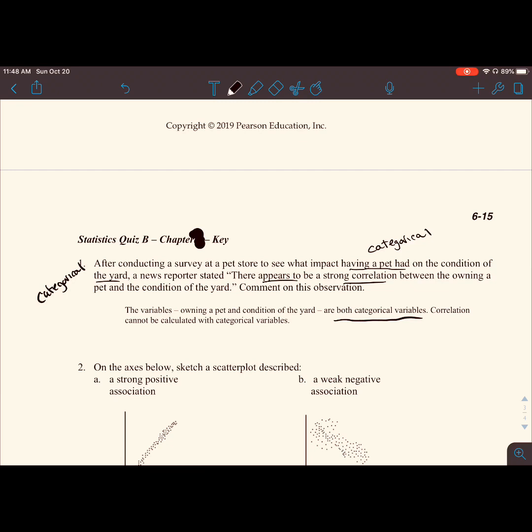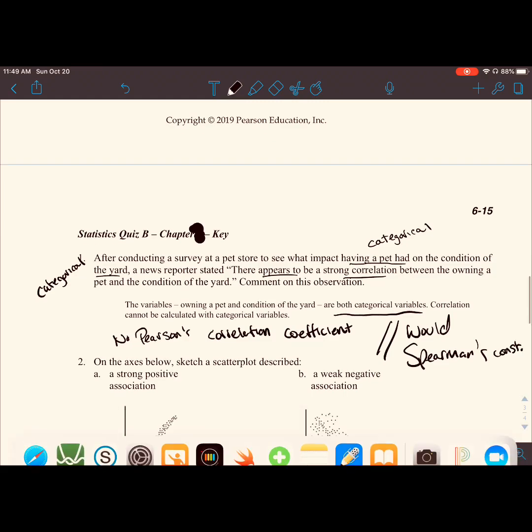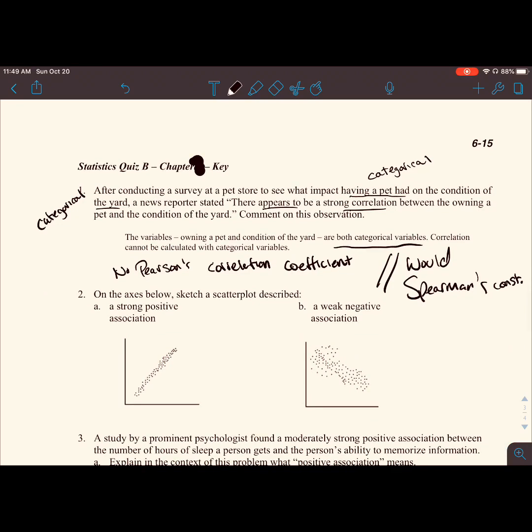We do not use correlation to be calculated with categorical variables. We don't use Pearson's constant. This would use Spearman's constant. If you don't remember, that's fine. Just know that with categorical variables, we do not use correlation.